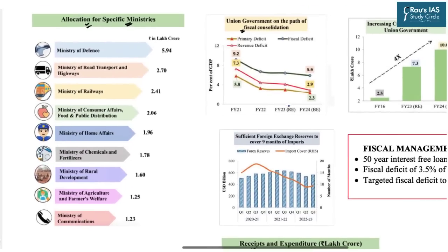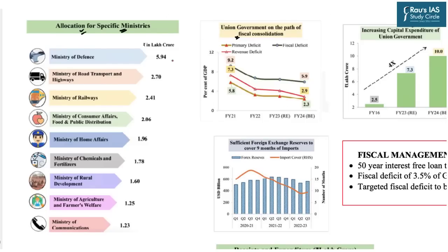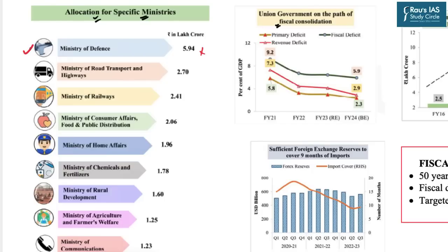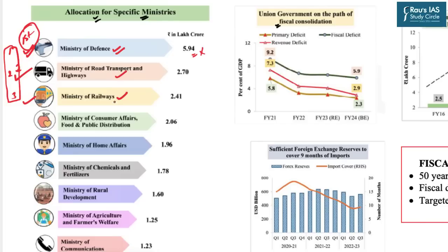As far as ministry-wise allocation is concerned, the data on which ministry received the maximum share is important for preliminary examination, as questions may ask you to arrange them in increasing or decreasing order. The Ministry of Defense has got the largest share — almost around 6 lakh crore. After Defense comes the Ministry of Road Transport and Highways, followed by the Ministry of Railways at third position. After these top three come Consumer Affairs and Public Distribution, then Home Affairs.